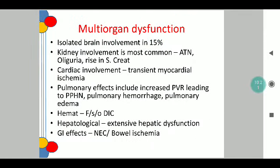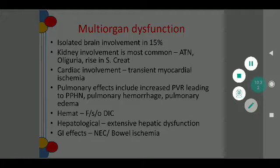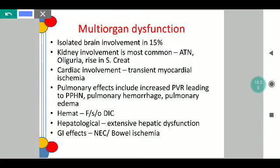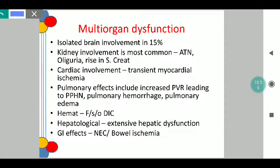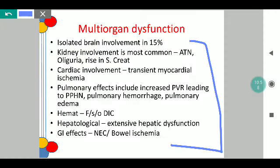Considering multi-organ dysfunction, isolated brain involvement will be 15%. Renal involvement will be seen because of acute tubular necrosis, oliguria, and a rise in serum creatinine which often goes five-fold. Cardiac involvement will be seen because of transient myocardial ischemia, and pulmonary effects such as persistent pulmonary hypertension, pulmonary hemorrhage, and edema. Hematological features suggestive of DIC will be very common, identified by the D-dimer test, and hepatic dysfunction along with effects such as necrotizing enterocolitis may also be seen.